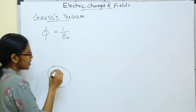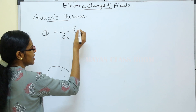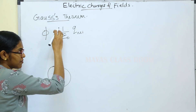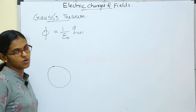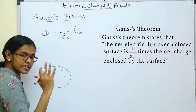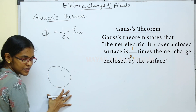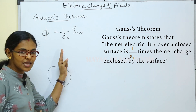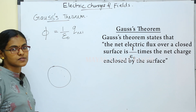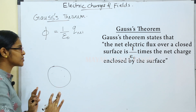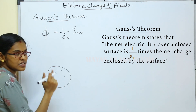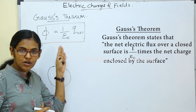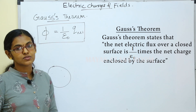The total charge enclosed by the surface, represented as Q, gives us the total flux equal to 1/ε₀ times Q. That is Gauss's theorem: the total electric flux over a closed surface equals (1/ε₀) times the total charge enclosed by the surface.